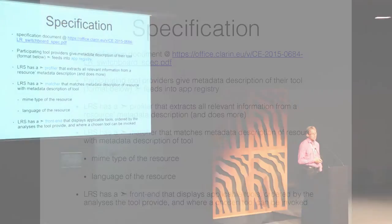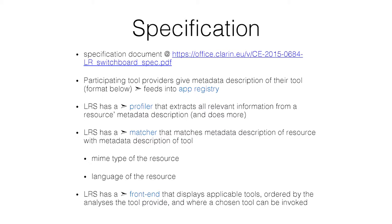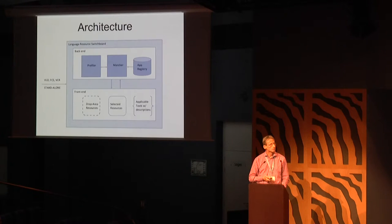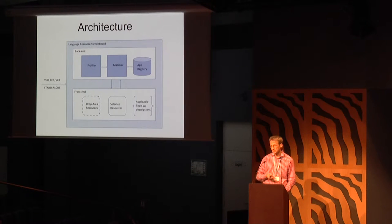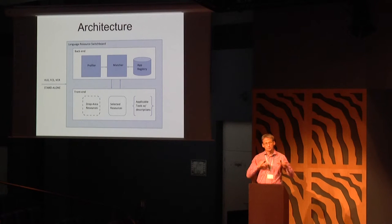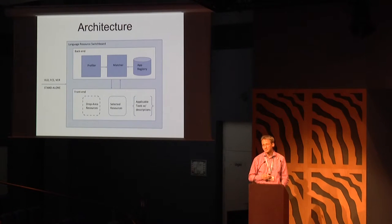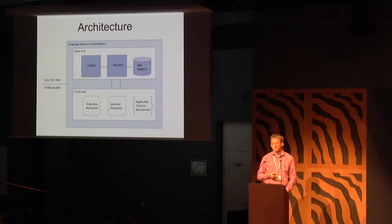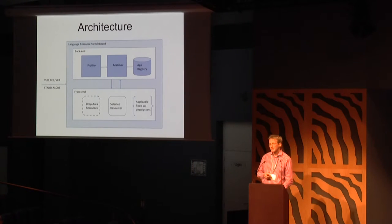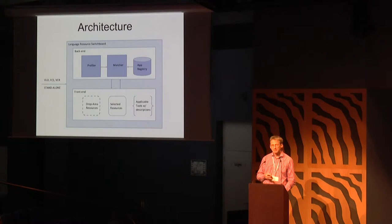There is a specification document for the switchboard available online on the CLARIN website. The architecture has a front-end — with a drag-and-drop area, resource information pane, and list of applicable tools — and a back-end with three main components: the tool registry, where tool developers send metadata describing their tools; the profiler, which identifies relevant metadata from the resource needed to find applicable tools; and the matcher, which brings together profiler output and tool registry information to compute the list of all applicable tools.